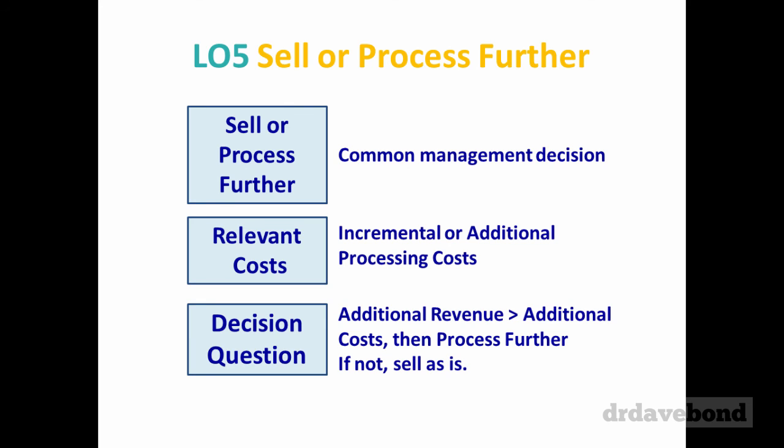The very final one: sell or process further? This is a fairly common decision — do you value-add and make it a little bit better than what you've already done? This is a story about change, and it's a good chance to reflect on what this whole topic was about: what is relevant. Once you produce something, the cost of production has sunk — you can't change that. So what is the marginal effect of value-adding to it?